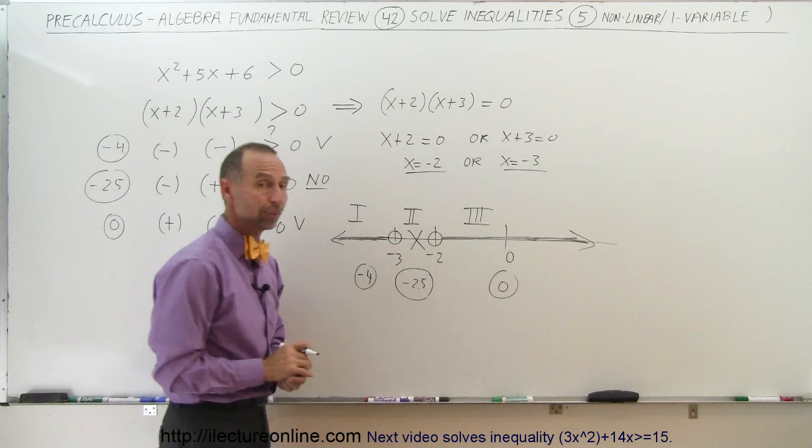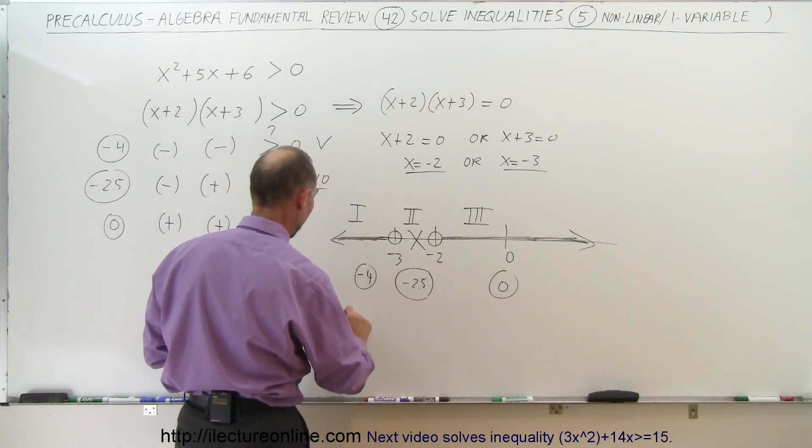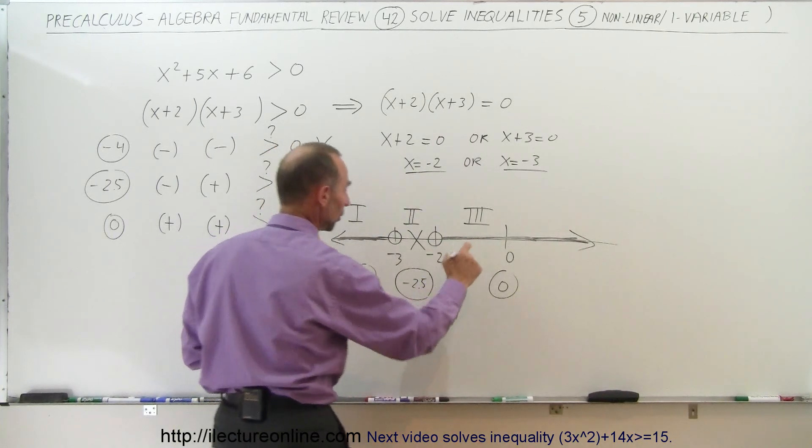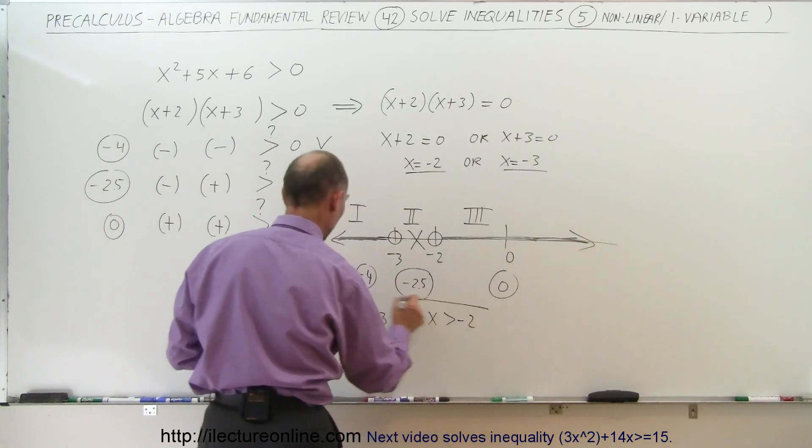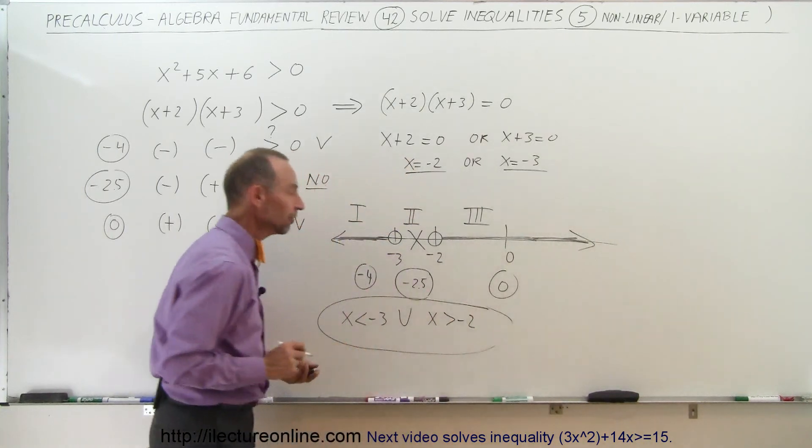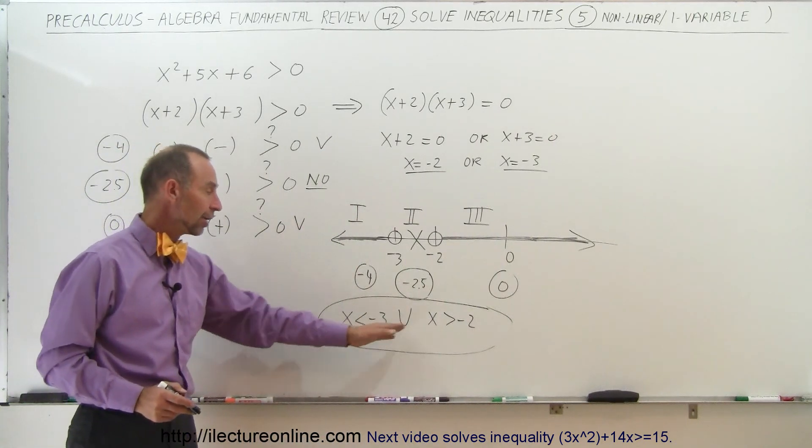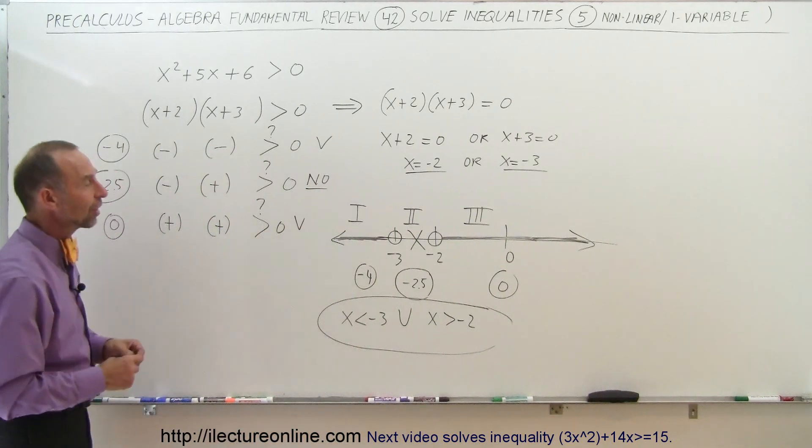Of course, not including negative 2. So what we can write, any number less than 3, so x less than negative 3, and union, any x greater than negative 2, that will then be the total solution of this inequality. So we're looking for all numbers that are less than negative 3, and all numbers that are greater than negative 2, and that will then satisfy this inequality.